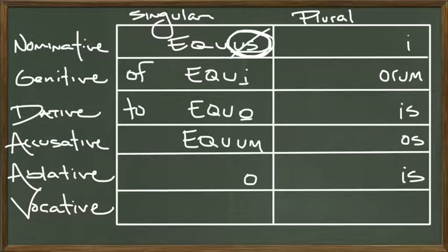If we're riding on the horse, we would use the preposition in, in Latin, and change the spelling of equus now to equo. Now we are riding on the horse. We'll come back to vocative in a minute.